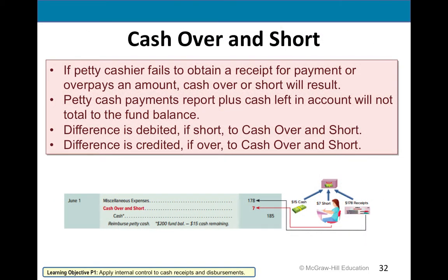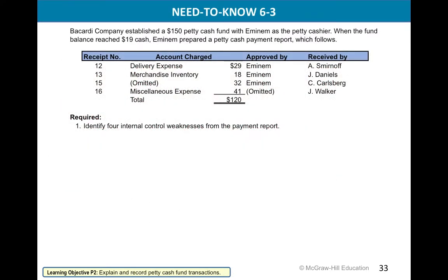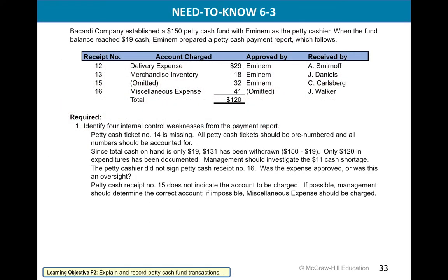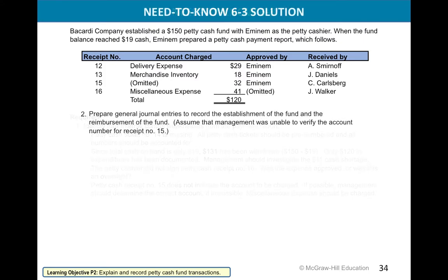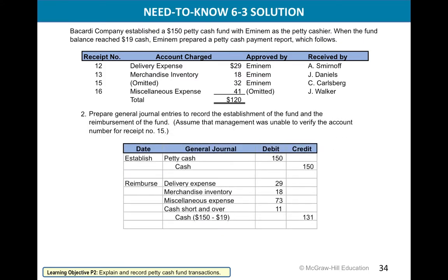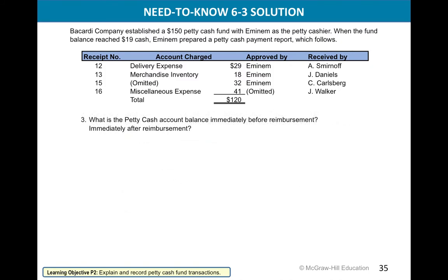Sometimes with petty cash there will be a difference for whatever reason. This goes back to the account we talked about earlier — cash over and short. For example, if the fund needs to go back to $150 but you spent $131 and only account for $120, the difference of $11 goes to cash over and short. It should always be reimbursed before and after back to the original amount, which in this case was $150.